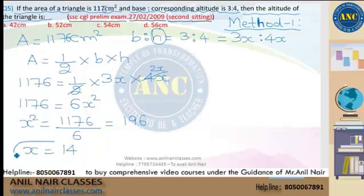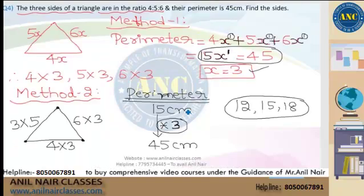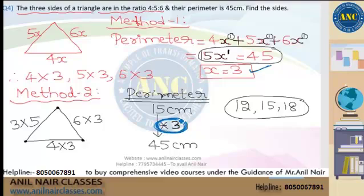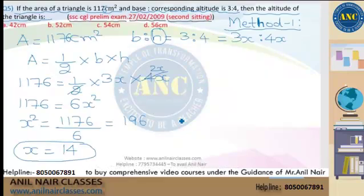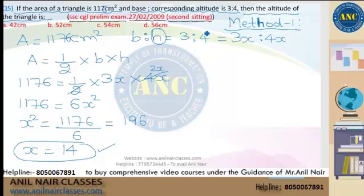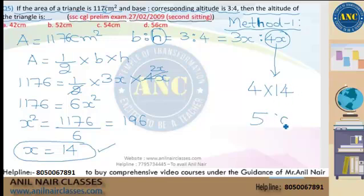So x² = 196, which means x = square root of 196 = 14. This x value is nothing but the multiplying factor. In Method 2 without variables, this x is the multiplying factor. Since the question asks for height, height = 4x = 4 into 14 = 56 cm. That is the answer from Method 1.